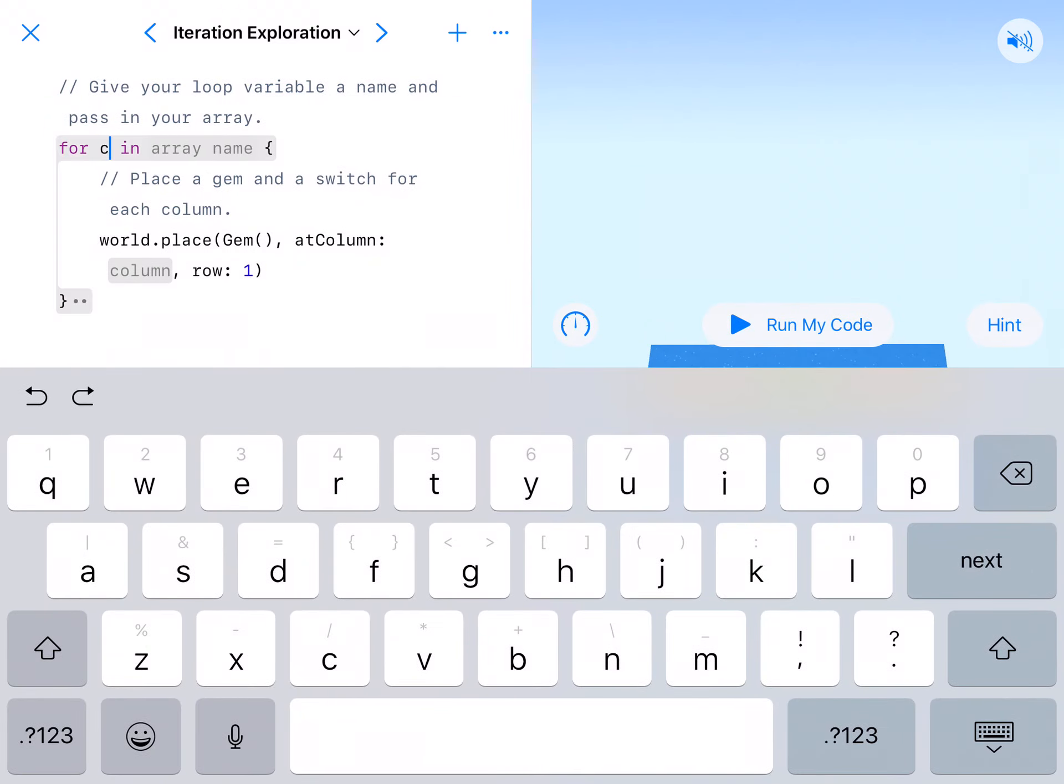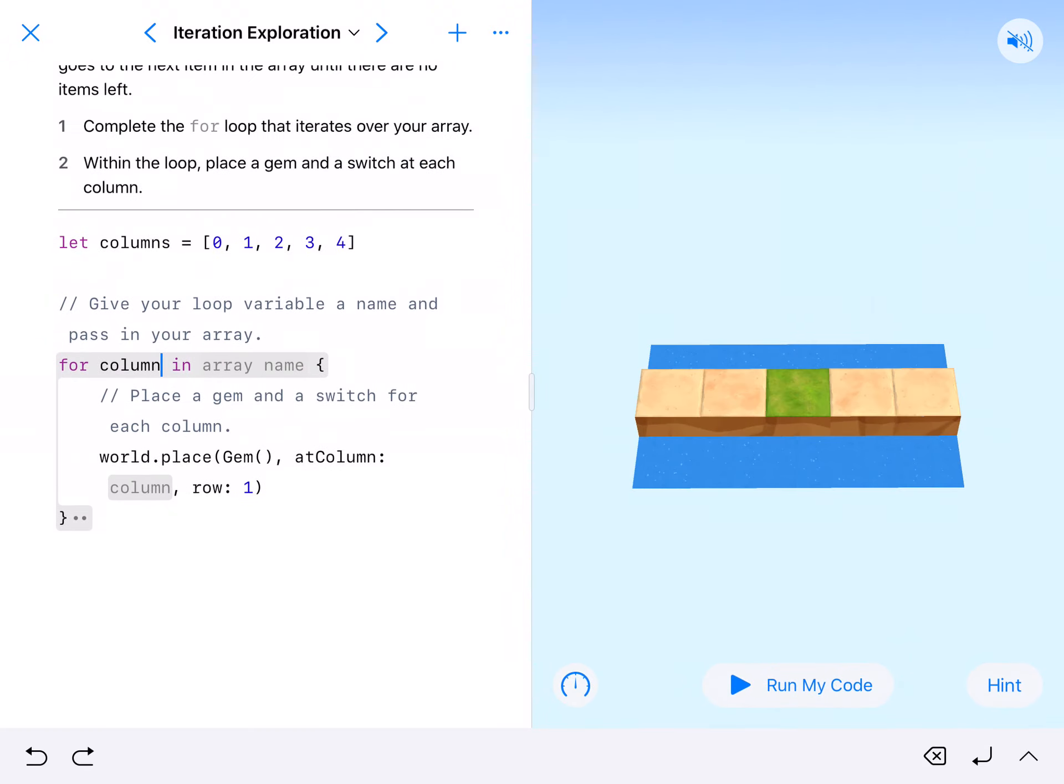We're going to type C-O-L-U-M-N. So for column in our array name... The array name up here is columns, so we'll do that. For column in columns, and we're looking at these columns right here. Notice there's only one row to put stuff on.